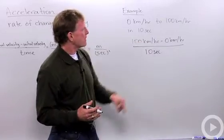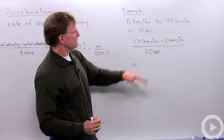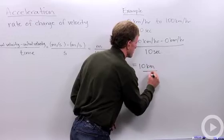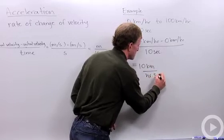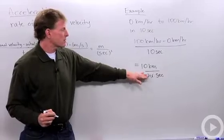So when we solve that, 100 minus 0 is 100 divided by 10 equals 10 km per hour second. So that is our rate of acceleration, 10 km per hour second.